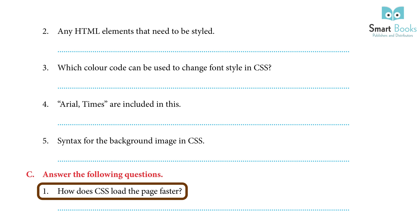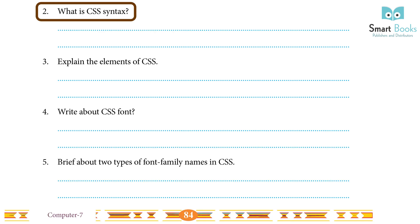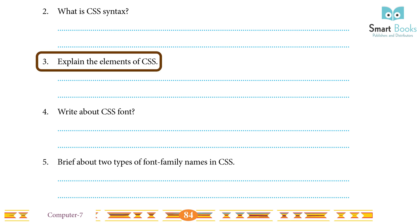Answer the following questions: 1. How does CSS load the page faster? Answer: As CSS style sheet code needs to be written once, the actual code a browser has to work on is less, so the page will download more quickly. 2. What is CSS syntax? Answer: Like all other languages, CSS has a syntax — a set of guidelines used when writing code. Example: h1 { color: yellow; font-size: 11px; } 3. Explain the elements of CSS. Answer: A CSS code consists of three important elements — selector, property, and value.